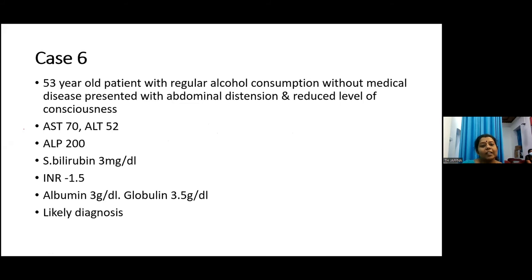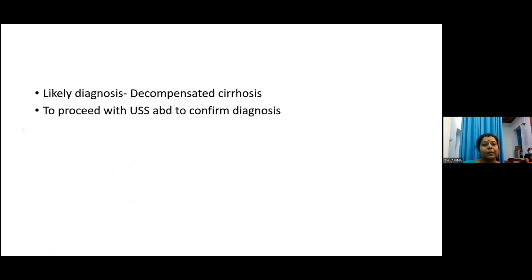Case six: a 53-year-old patient with regular alcohol consumption, without medical diseases, presented with abdominal distension and reduced level of consciousness. Liver functions: AST 70, ALT 52, alkaline phosphatase 200, bilirubin 3 mg/dL, INR 1.5, albumin 3, globulin 3.5. The likely diagnosis is decompensated cirrhosis — the clinical picture of chronic liver cell disease with alcohol as the underlying cause. The next step is ultrasound abdomen to confirm the diagnosis.